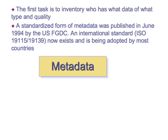The first task is to inventory who has what data of what type and quality. A standardized form of metadata — a metadata standard — was published in 1994 by the U.S. Federal Geographic Data Committee. There's now an international standard, ISO 19115, and its XML equivalent, 19139, that is available and being adopted by most countries.